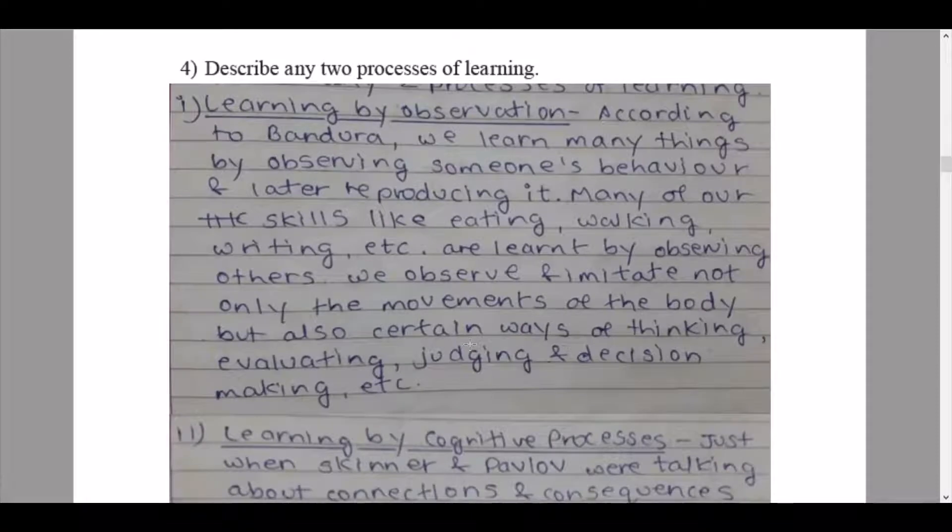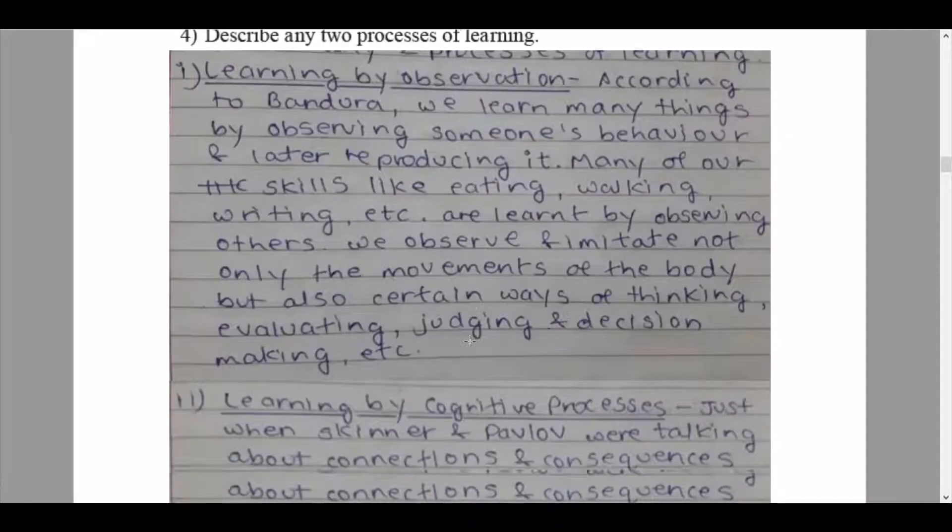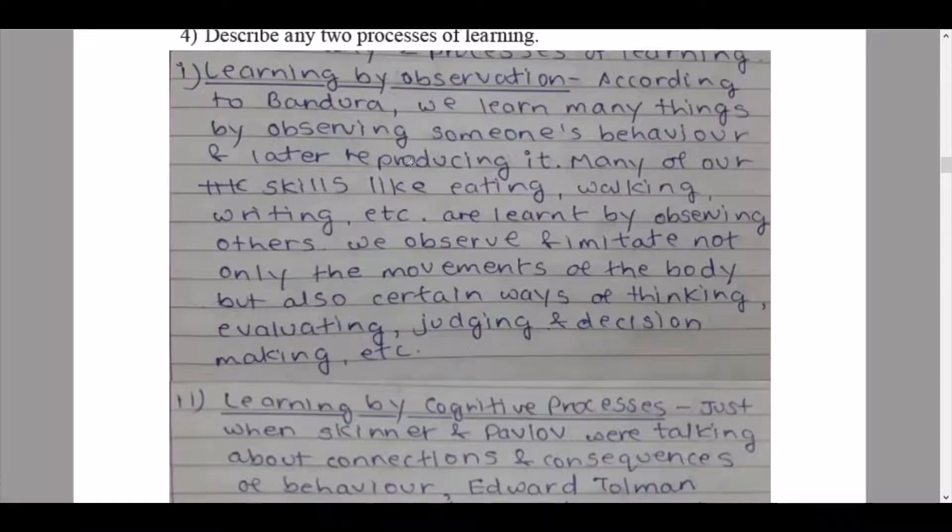Then I'll scroll down to question number four: describe any two processes of learning. So the two processes we'll be explaining in this question would be learning by observation and learning by cognitive processes. So we'll start with learning by observation. According to Bandura, we learn many things by observing someone's behavior and later reproducing it. Many of our skills like eating, walking, writing, etc. are learned by observing others.